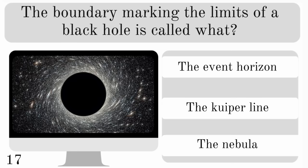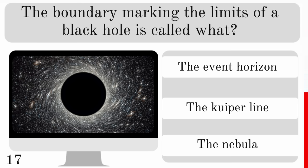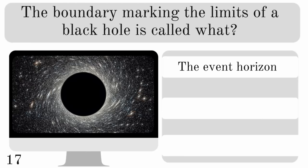The boundary marking the limits of a black hole is called what? The event horizon, the Kuiper line or the nebula? The answer is the event horizon.